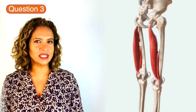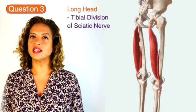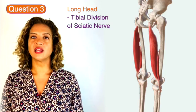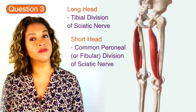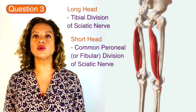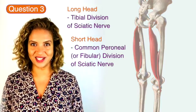Now this muscle has an interesting nerve supply as the long head is supplied by the tibial nerve and the short head is supplied by the common peroneal or common fibular nerve. Both of these nerves are of course direct branches of the sciatic nerve.